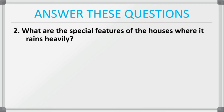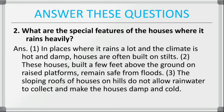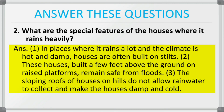Next question: what are the special features of houses where it rains heavily? In places where it rains a lot and the climate is hot and damp, houses are often built on stilts — raised a few feet above the ground on raised platforms — to remain safe from floods. The sloping roofs of houses on hills do not allow rain water to collect and make the houses damp and cold, so they build sloping roofs so that rain water will flow away.